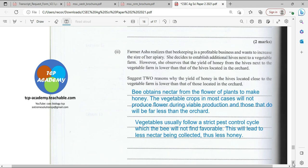Farmer Asha realized that beekeeping is a profitable business and wants to increase the size of her apiary. She decides to establish additional hives next to a vegetable farm. However, she observed that the yield of honey from the hive next to the vegetable farm is lower than the hives located in the orchard. Suggest two reasons why the yield of honey in the hives located close to the vegetable farm is lower.